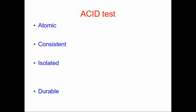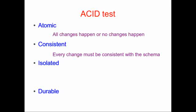There's what's called the ACID test. Transactions have to be atomic, consistent, isolated, and durable. Atomic means, as we've discussed, that all the changes happen or none of the changes happen. Consistent means that every change must be consistent with the schema — you can't add carrots to my bank account, you have to add dollars. So changes have to be consistent.